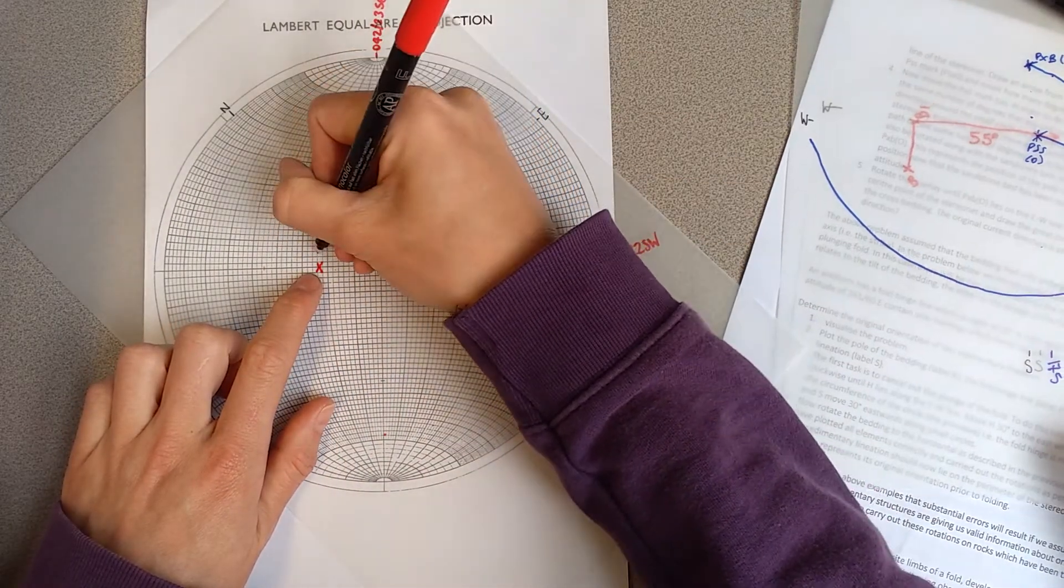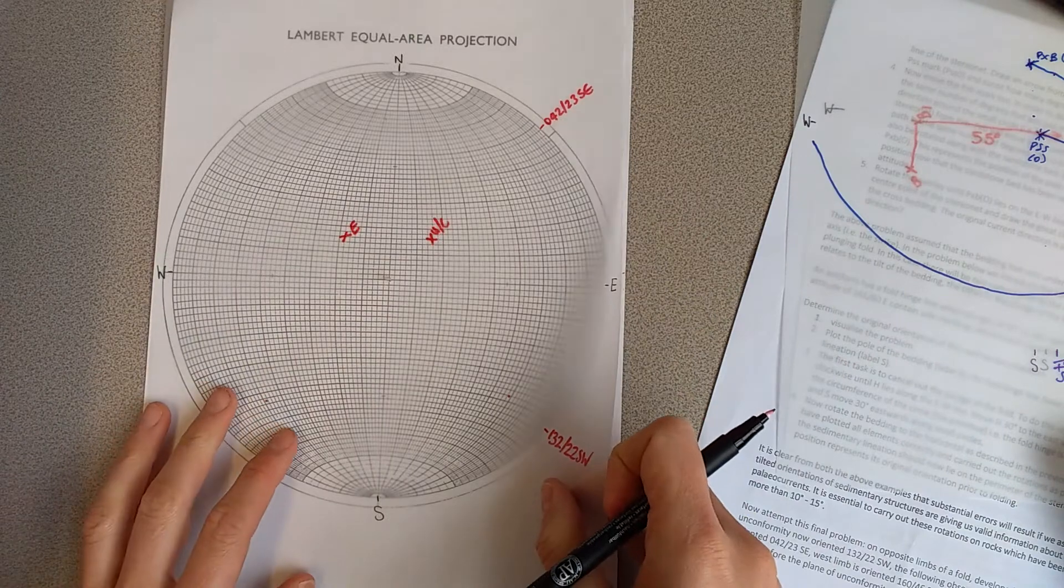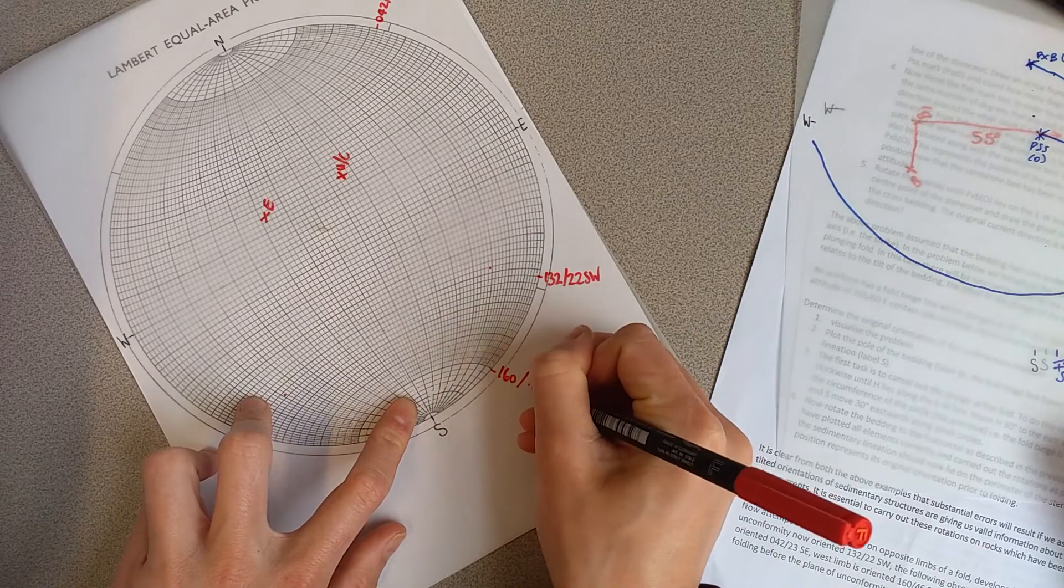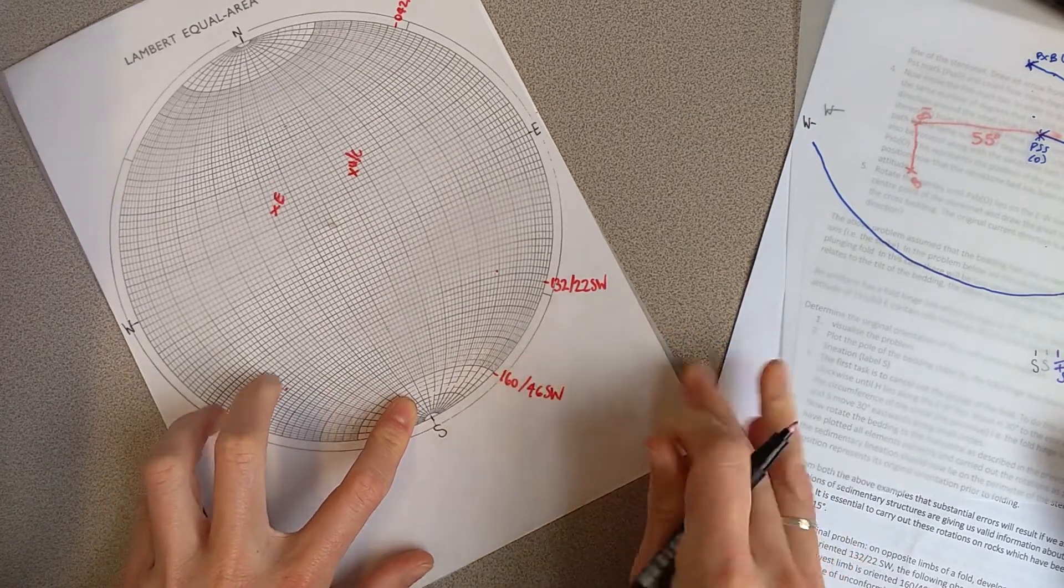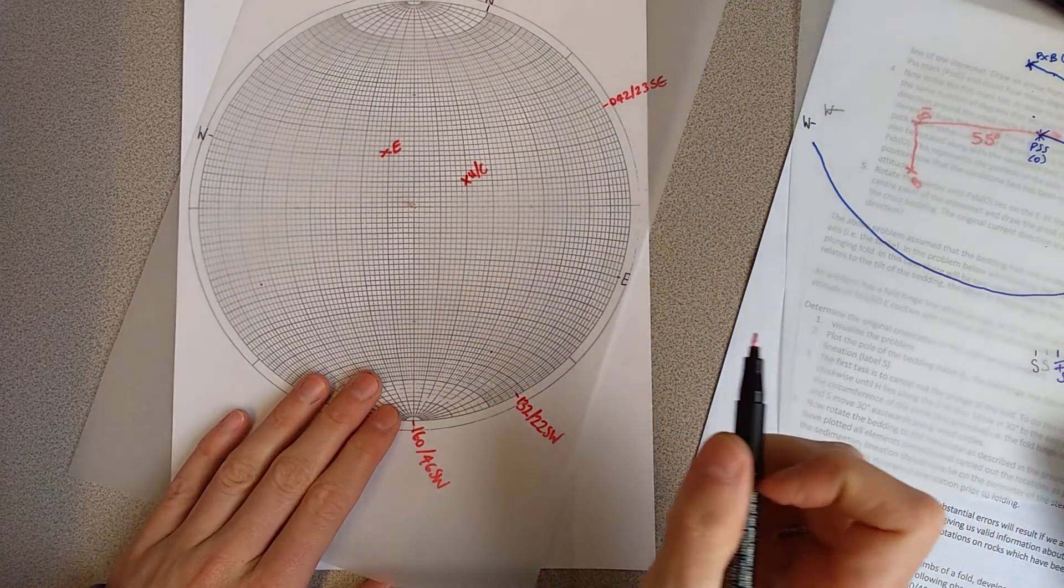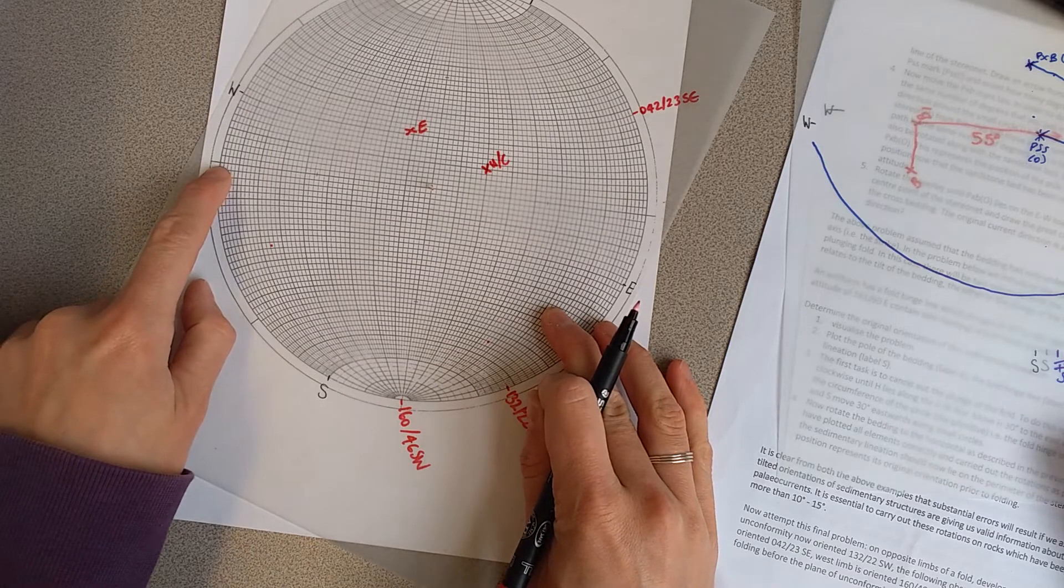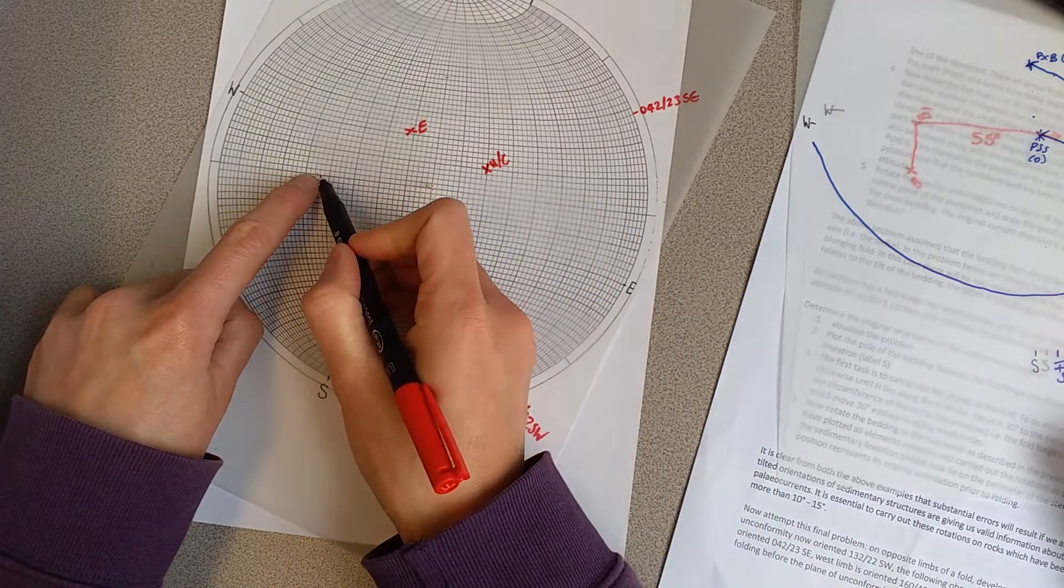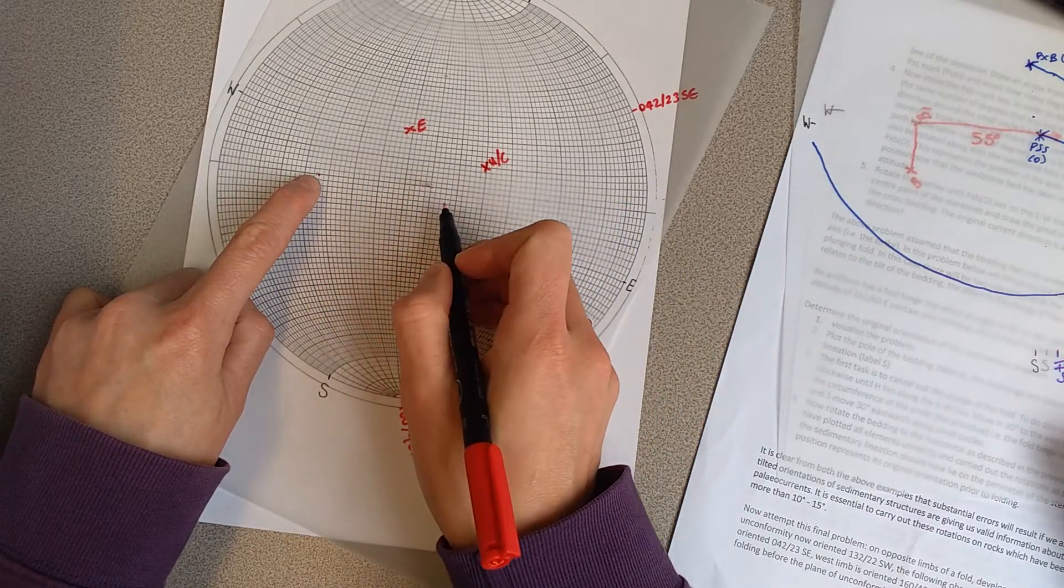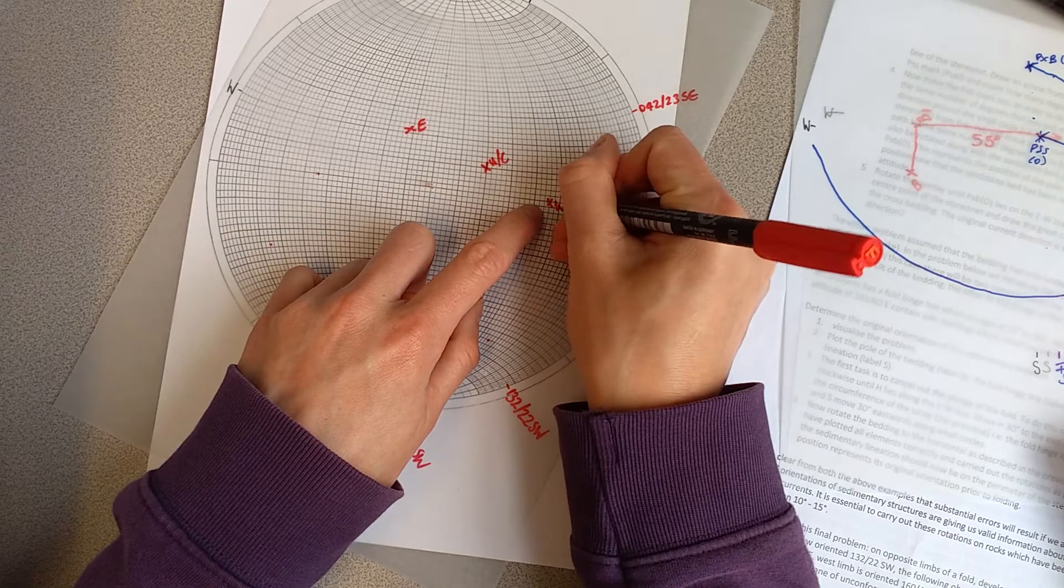Now we're going to look at our west limb, which is 160, 46 southwest. Rotate that round and count in 46. Southwest is on this side of the stereonet now. Count 46: 10, 20, 30, 46. Then go 90 more from that point: 10, 20, 30, 40, 60, 70, 80, 90. That is our west limb.